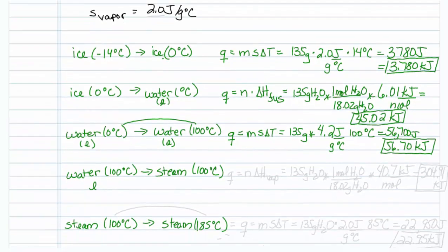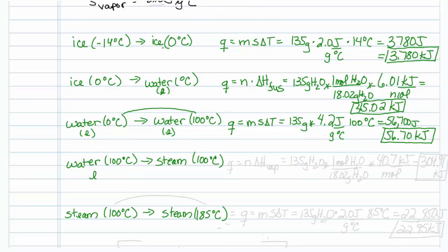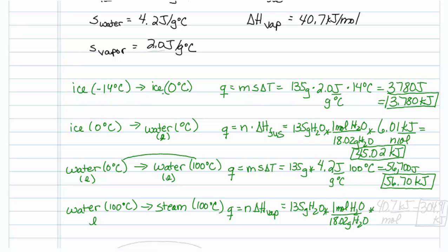Now we need to go from liquid water to vaporous water, steam. So Q is equal to n times the heat of vaporization. So I will take my 135 grams water, I will figure out the moles of water by dividing by the molar mass, and this time I will multiply it by the delta H of vaporization, which turns out to be 40.7 kilojoules per mole. And that turns out to be 304.91 kilojoules.